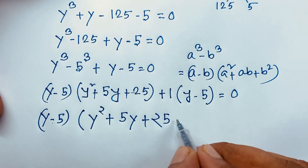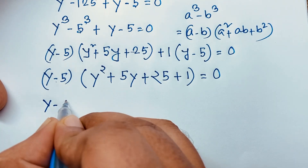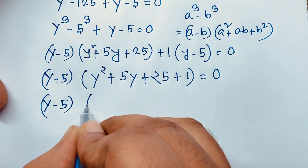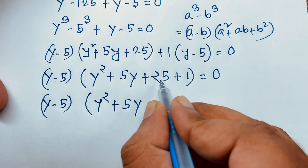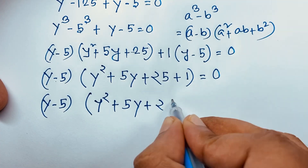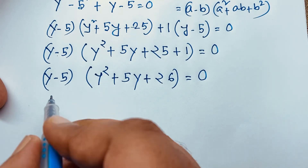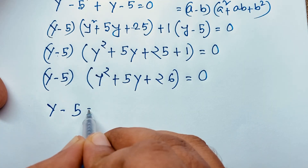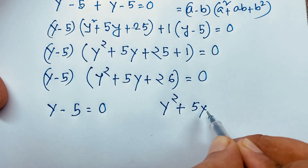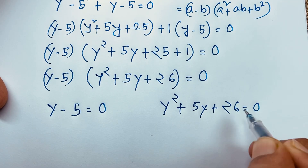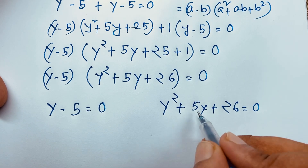So we have two cases. The first case is y minus 5 equals 0. The second case is the quadratic equation y squared plus 5y plus 26 equals 0. For the quadratic, a equals 1, b equals 5, and c equals 26.